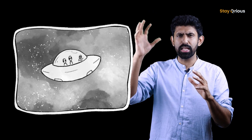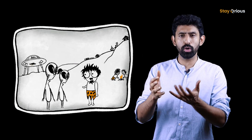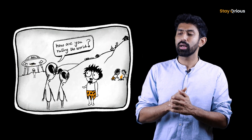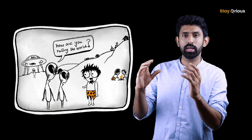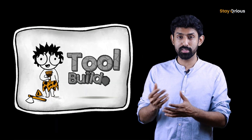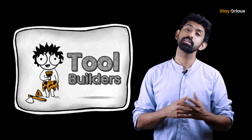To answer that, you have to go into who humans are. Let's imagine aliens came down and they're asking, humans, you look like you're ruling the world — how, why? One way to answer that is: what is the one-line summary of humans? My answer would be: humans are tool builders. Humans are tool builders.